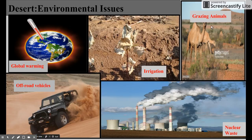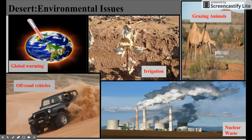Grazing animals can often eat much of the vegetation found in the desert, leaving it a barren landscape. Nuclear waste and byproducts can also kill the vegetation around where that facility is located, and that nuclear waste can create a desert.